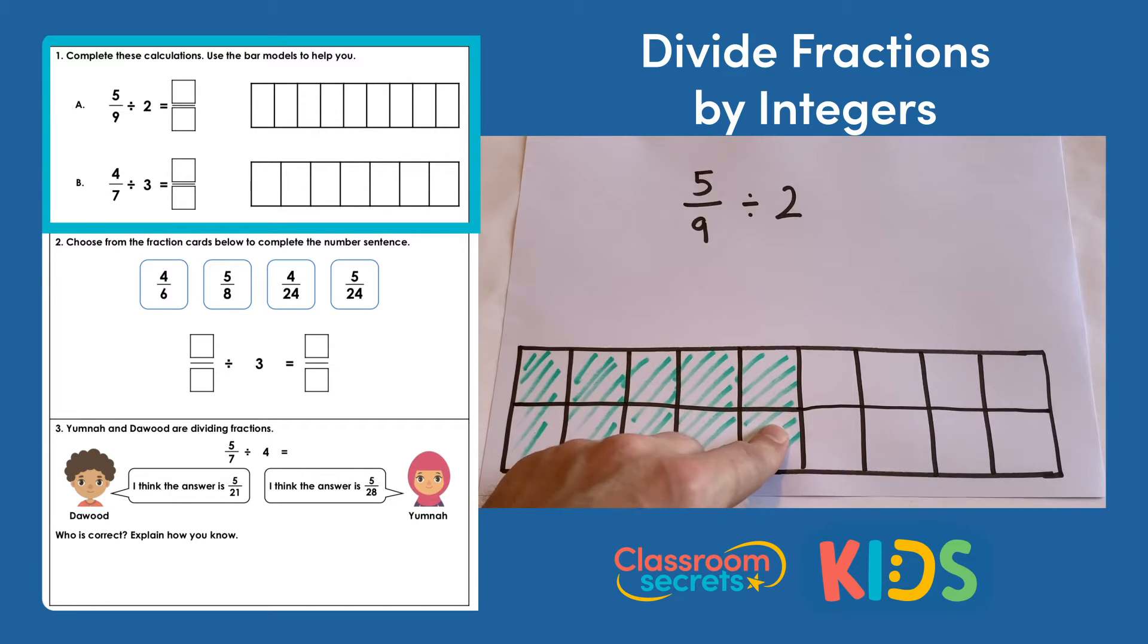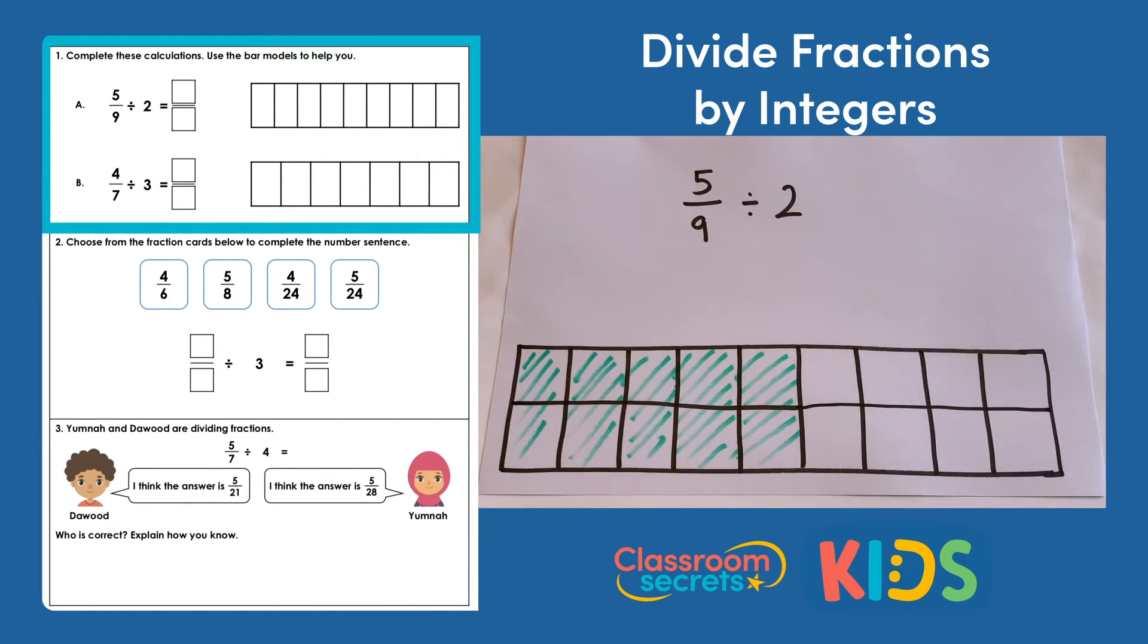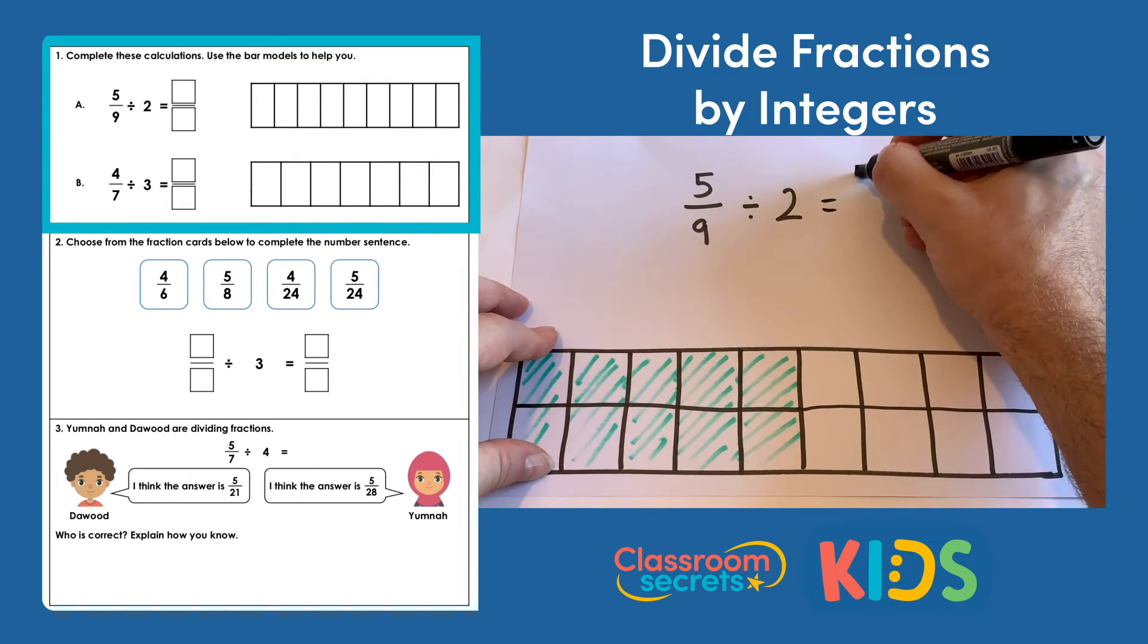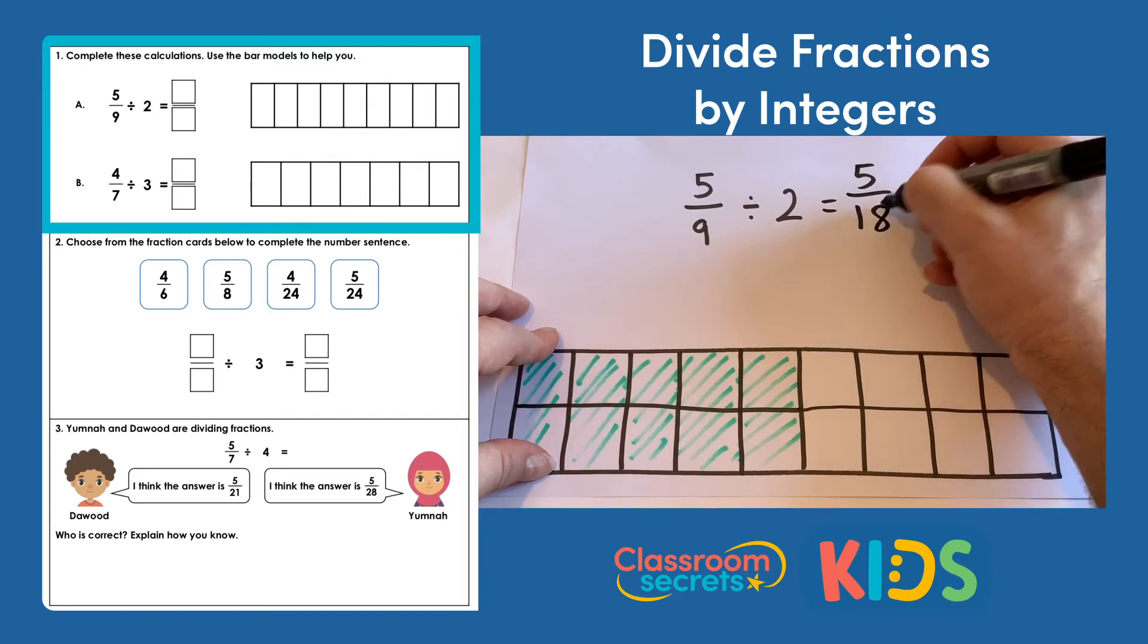So you can see that actually if we divide all the ninths by 2 we'll have 18ths. And we're talking about 5 of those 18ths. So these 5 ninths here are the ninths that we had, the 5 ninths, and we're splitting those into 2. So actually we'll have 1, 2, 3, 4, 5 of the 18ths. So 5 ninths divided by 2 would be 5 18ths.